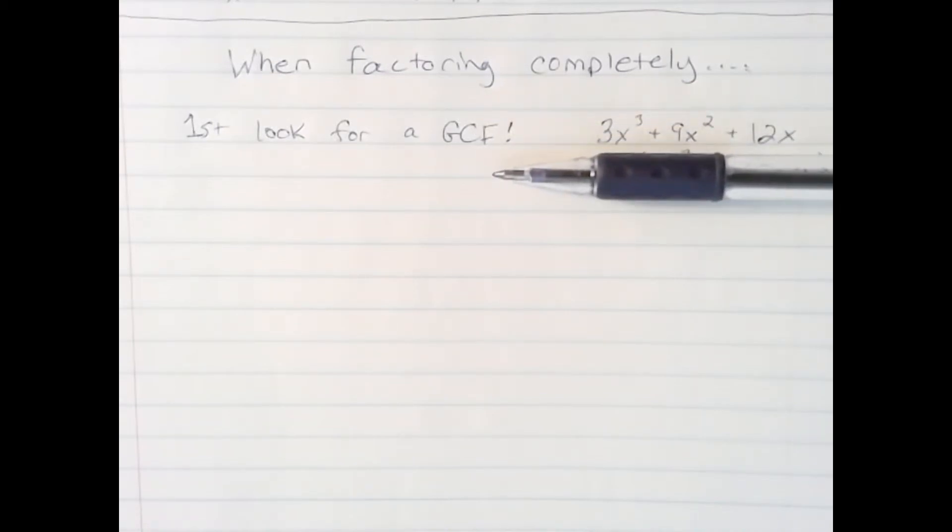Look at our trinomial here. We have 3x cubed plus 9x squared plus 12x. The first thing I want to look for is can anything be taken out of all 3? I have a 3, a 9, and a 12. And so yes, we can take out a 3 from each of those terms.